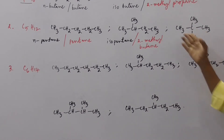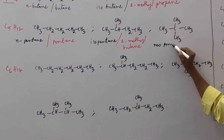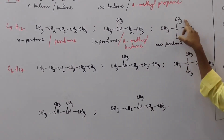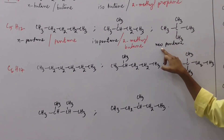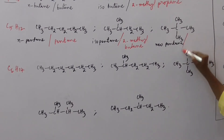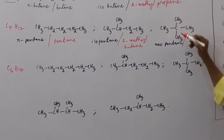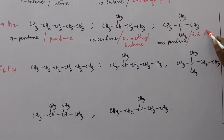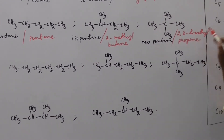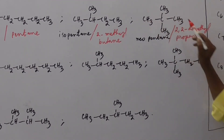One more example for the C5H12 molecular formula is neopentane. At the second carbon, 2 methyl branches are there, therefore it is called neopentane, and the molecule contains 5 carbons. According to IUPAC, there are 3 carbons in a chain and 2 methyl branches at the second carbon, so it is known as 2,2-dimethylpropane.